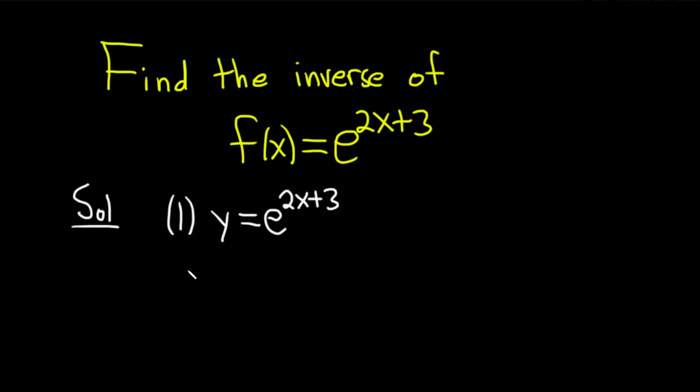The second step is to interchange your variables. You want to replace y with x. Instead of y, we have x. This is equal to e to 2y plus 3. y becomes x, and your x becomes y.